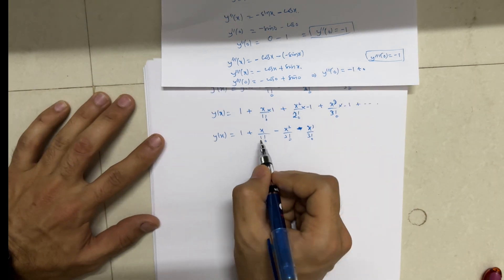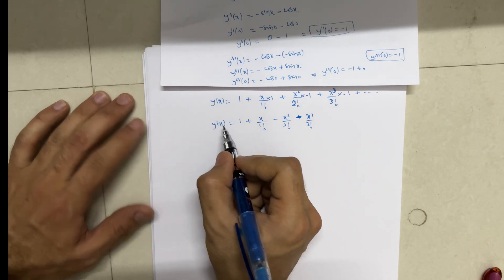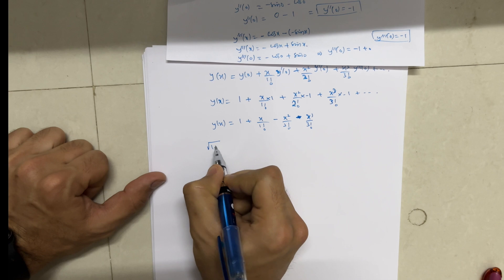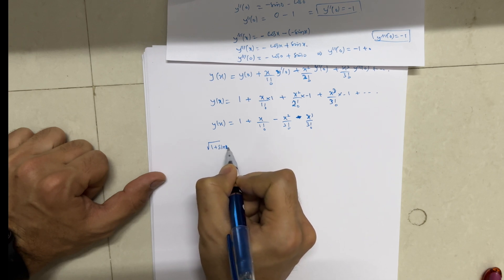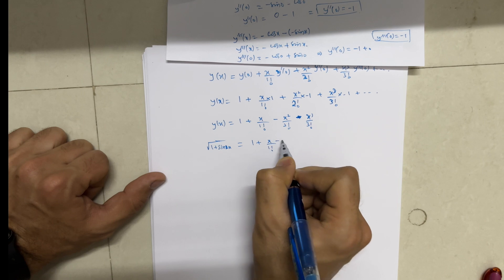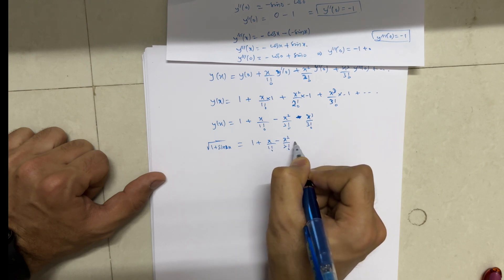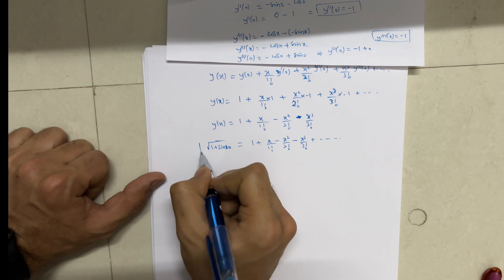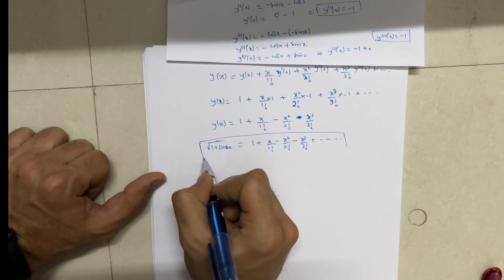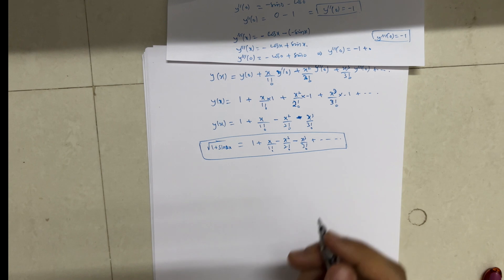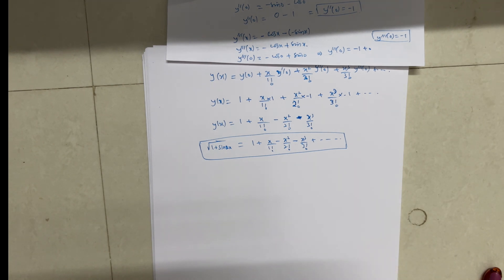Therefore, the final answer is: √(1 + sin 2x) = 1 + x/1! − x²/2! − x³/3! + and so on. This is the required Maclaurin series expansion for this particular function. I hope you understood this problem very well. Make sure you share this video to all your friends and batchmates who are struggling with the Maclaurin series. Thank you.